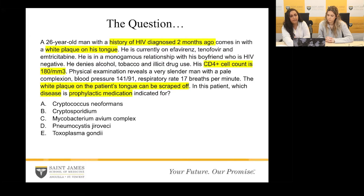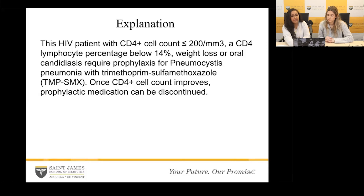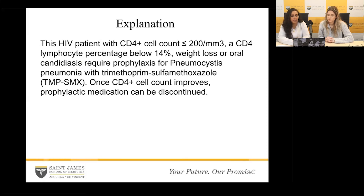The candida tells us he has opportunistic infections due to his low CD4 count, making him prone to other diseases. Based on this, and the fact that his CD4 count is now 180, the correct answer is Pneumocystis jirovecii. This HIV patient has a CD4 count less than 200, lymphocyte percentage below 14%, weight loss, and oral candidiasis — all of which point toward a requirement for prophylaxis against Pneumocystis jirovecii with trimethoprim-sulfamethoxazole. Once the CD4 count improves, the prophylactic medication can be discontinued.